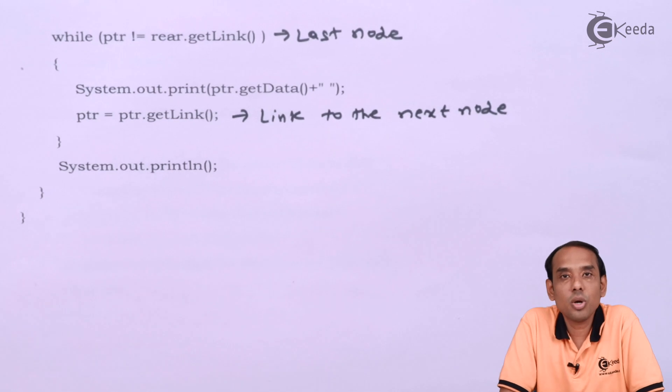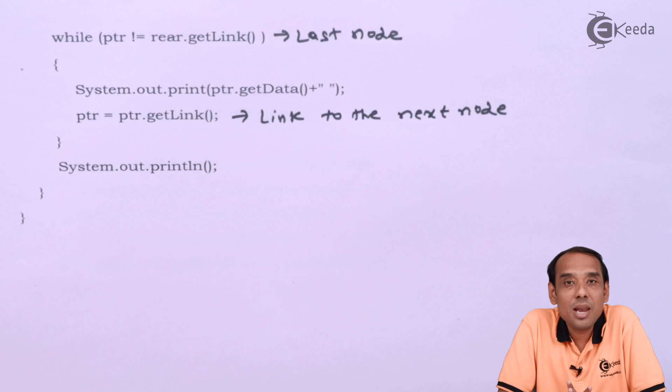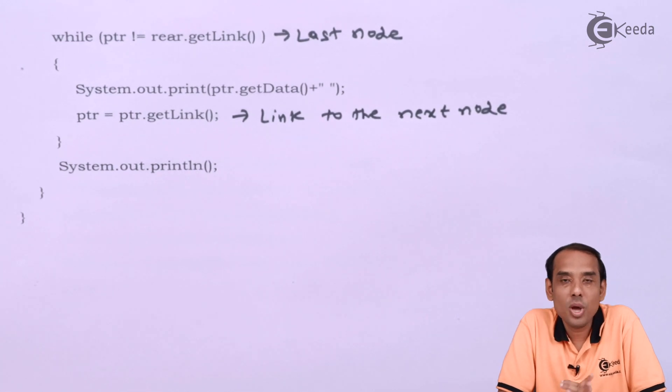Now this will clear your concept of status of the queue. Status of the queue is what? Displaying the elements present in the queue. Whenever the elements are inserted, size is going to increase. Whenever the elements are deleted, size is going to decrease. Now, like this, we can go through the iteration concept also.